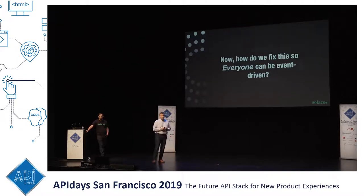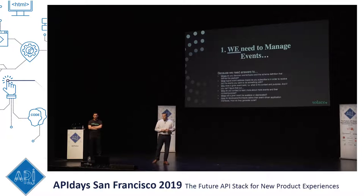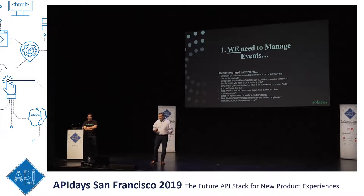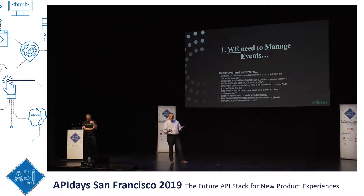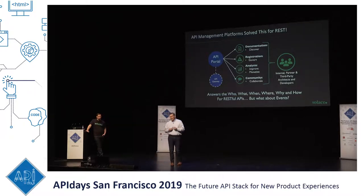How do we fix this so it's not just a niche for large banks and large telcos? Our perspective is that APIs aren't going anywhere — they're great for commands and queries — but there is this category of events. To be real-time and event-driven is what many organizations are trying to achieve. We need to be able to manage events: answer the who, what, when, where, why, and how. Where do I discover events? How do I specify asynchronous application interfaces and do lifecycle management, deprecation, and even code generation like you can with OpenAPI and Swagger?